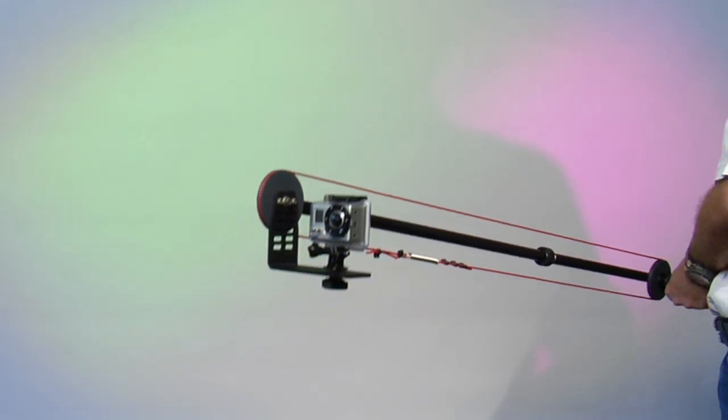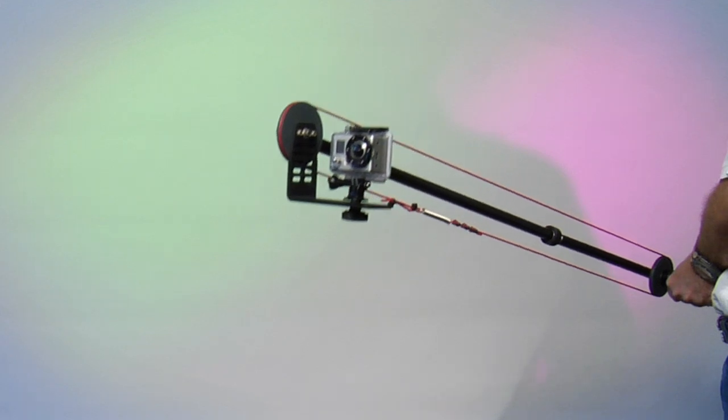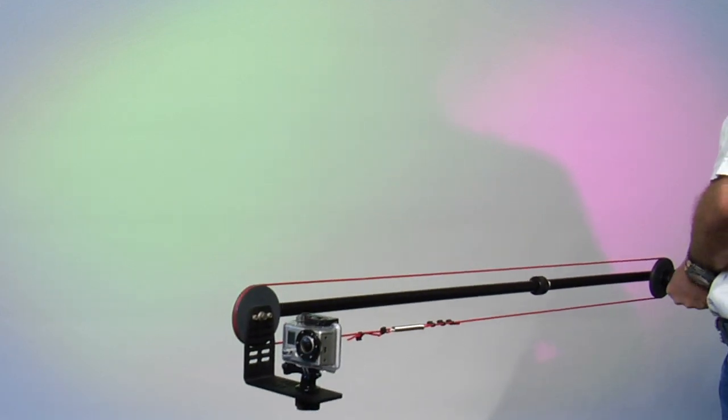The micro jib also makes a great remote pan and tilt head for shooting above crowds and anywhere a high or low angled shot is needed.